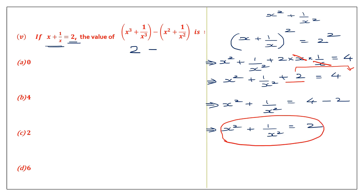So x squared plus 1 by x squared equals 4 minus 2, which is 2. The full expression is x cubed plus 1 by x cubed plus x squared plus 1 by x squared, which becomes 2 plus 2 minus 2, giving 0. That is option A.